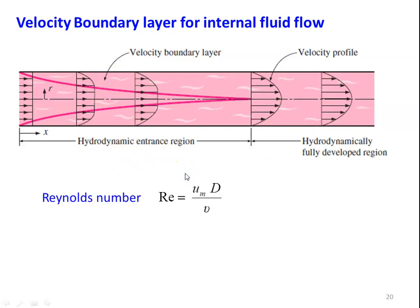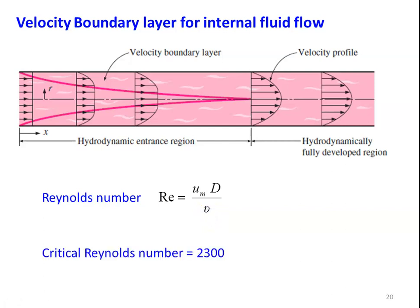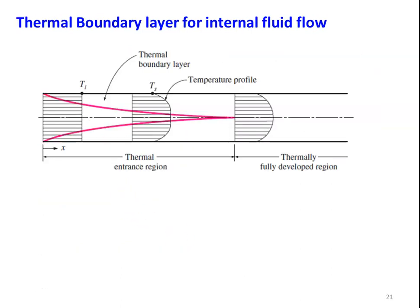For internal pipe flow, the Reynolds number is Re = U_m × D / ν, where U_m is the mean velocity, D is the pipe diameter, and ν is the kinematic viscosity. The critical Reynolds number is 2300: when Re < 2300, flow is laminar; when Re > 2300, flow is turbulent. Similarly, for the thermal boundary layer in internal flow, there is a thermal entrance region and a thermally fully developed region with a corresponding temperature profile.